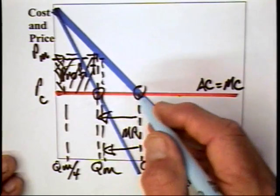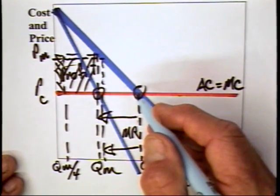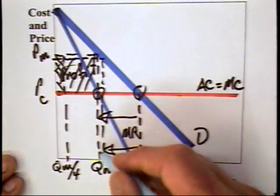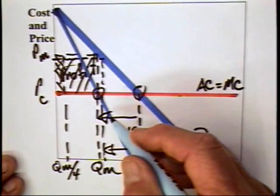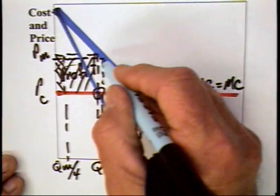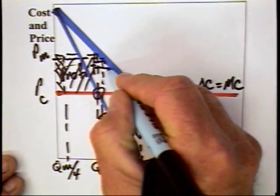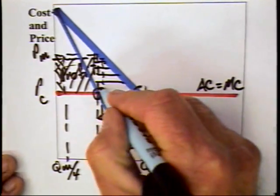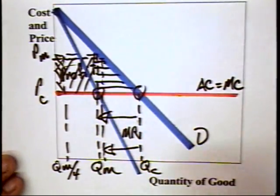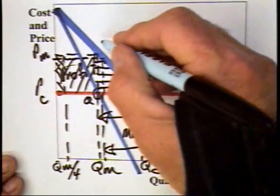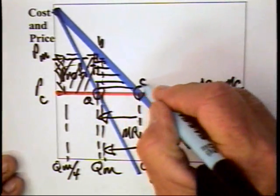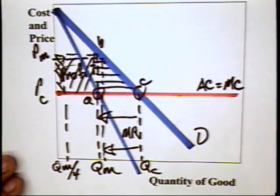But I guess I should point out that in the event that we have a cartel that's formed and that we have monopoly profits, then the inefficiency that's going to be created by this cartel is going to be equal to the triangular area that we've talked about in other video modules, triangular area ABC. That's the inefficiency. That's the deadweight loss. That's also the gain to be had by breaking up a cartel.